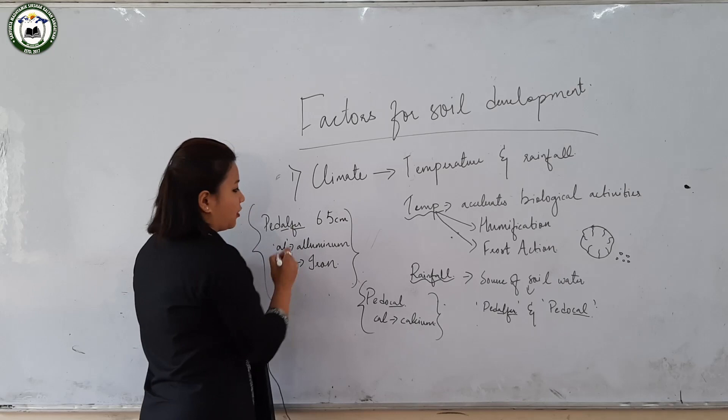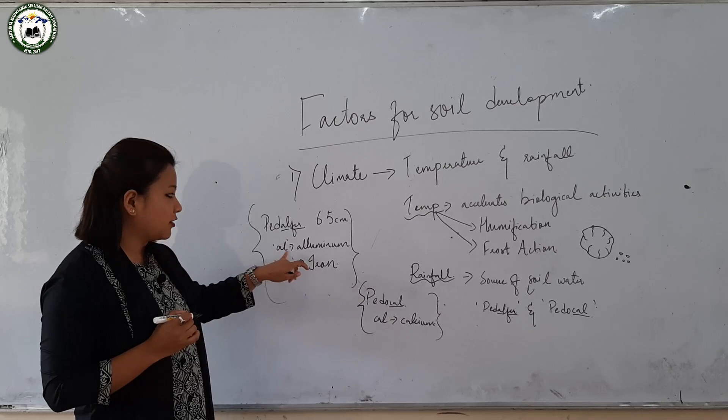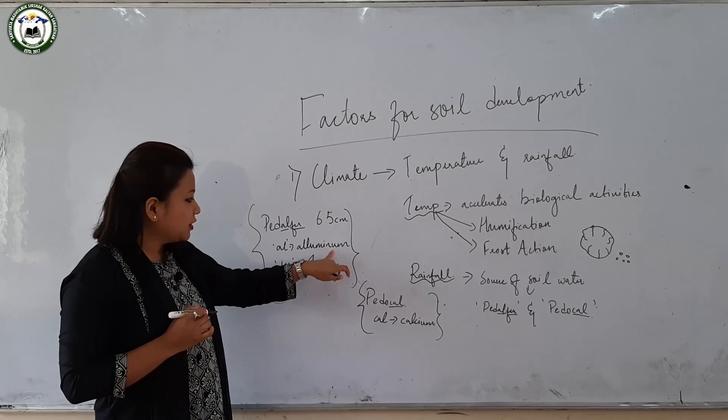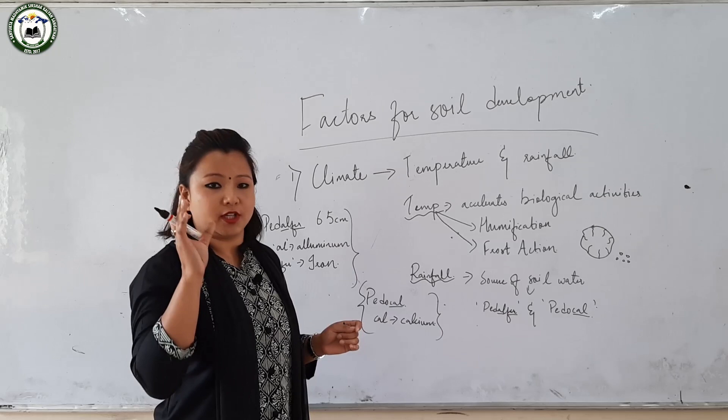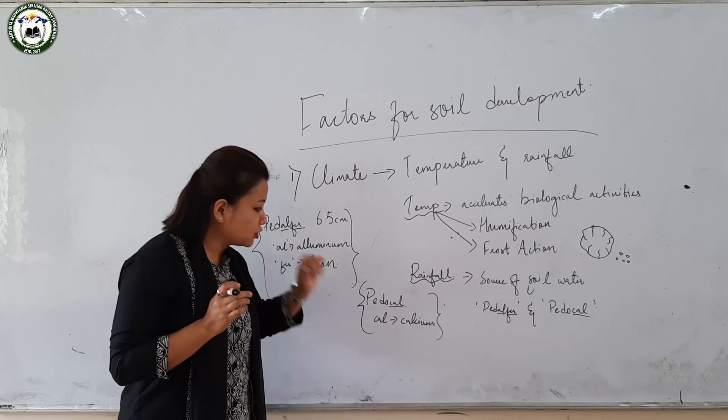Pedalfer is rich in aluminium (Al) and iron (Fe). Aluminium and iron accelerate the growth of larger trees; therefore, in forested areas this type of soil is profoundly found. Coming to pedocal: in areas which experience less than 65 cm of rainfall annually, there is the development or extraction of materials called calcium. It is due to the calcium that there is the growth of luxuriant plants, which are profound in semi-arid areas.